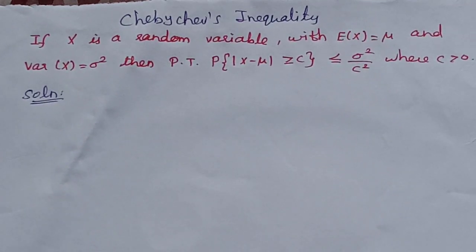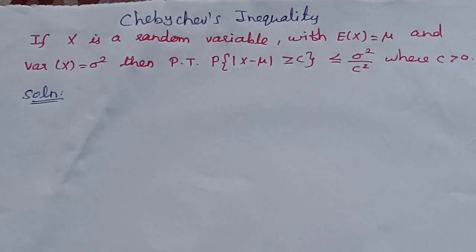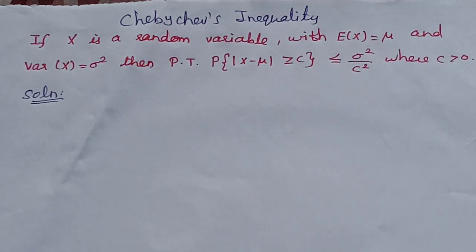Now, we can see how to prove this. X is a random variable — random variables can be discrete or continuous. If we have a continuous variable, we can use the definition of expectation and variance using the integral. If we have a discrete variable, we can use the summation.